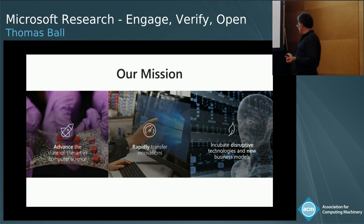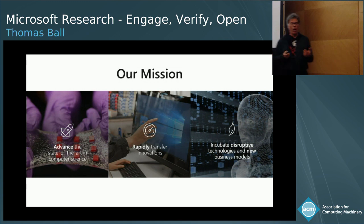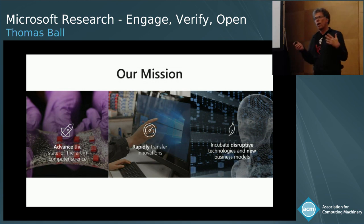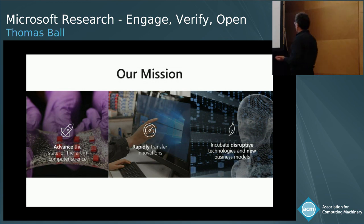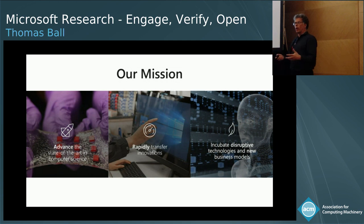If you think about our mission, there are three parts: first, advance the state of the art — primarily in computer science, though we have economists, social scientists, and theoretical physicists as well. Second, rapidly transfer innovations to our product partners for business impact. Third, incubate disruptive technologies and new business models — because working with a product group, you're in their business model, and this third part addresses ideas that don't fit current product group thinking.